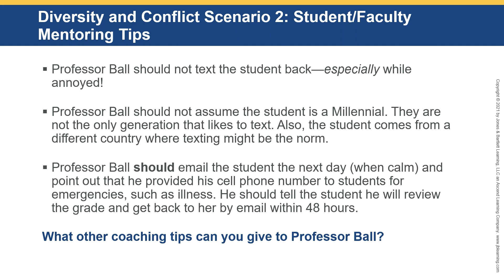The student-faculty conflict two involves the student texting Professor Ball. First, Professor Ball should not text the student back, especially while annoyed. Professor Ball should not assume the student is a millennial — they're not the only generation that likes to text. Also, the student comes from a different country where texting might be the norm because internet service can be spotty. Professor Ball should email the student the next day when calm, pointing out that he provided his cell phone number for emergencies such as illness, not for grade disputes. He should tell the student he will review the grade and get back to her by email within 48 hours.